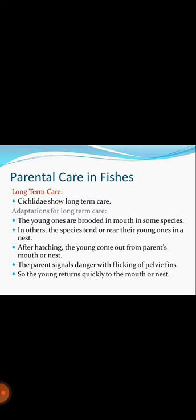Now we will discuss long-term care, which is provided by cichlids. Cichlids are a family of fishes comprising more than 1300 species in the order Perciformes, many of which are popular aquarium fishes. Cichlids are primarily freshwater fishes found in tropical America, mainland Africa, Madagascar, and southern Asia, with the majority of species being African, appearing in great diversity in the major African lakes. These species usually do not grow more than 30 cm in length. They have different adaptations for long-term care: the young are brooded in the mouth in some species, while in others the species tend and rear the young ones in a nest.